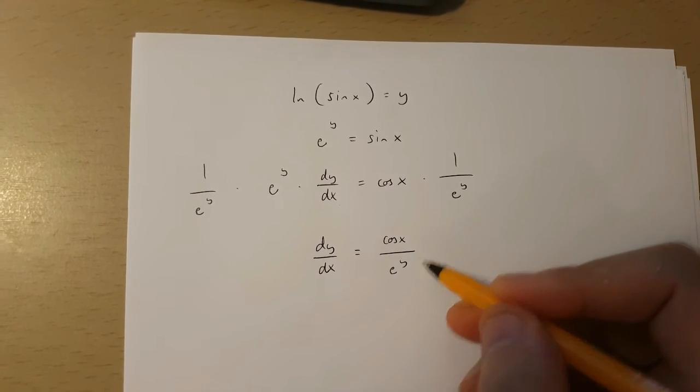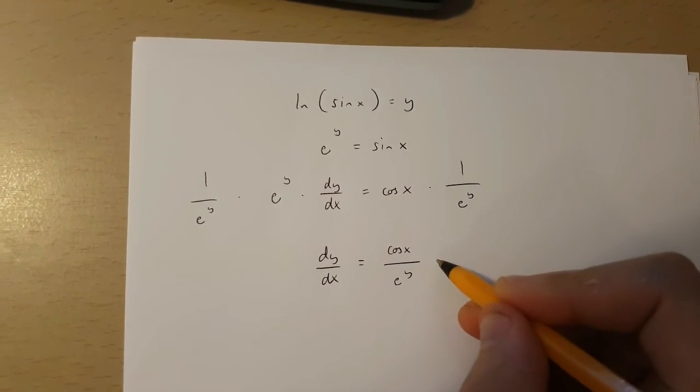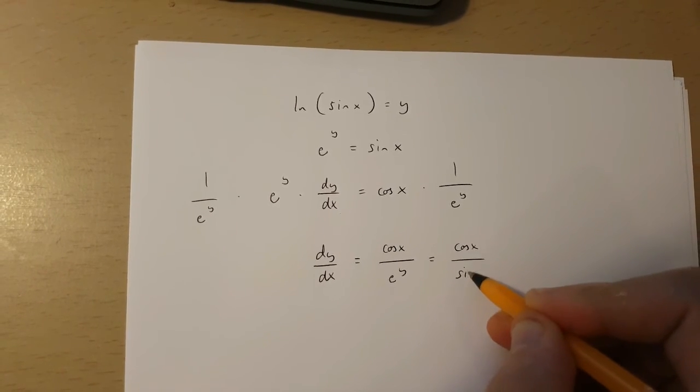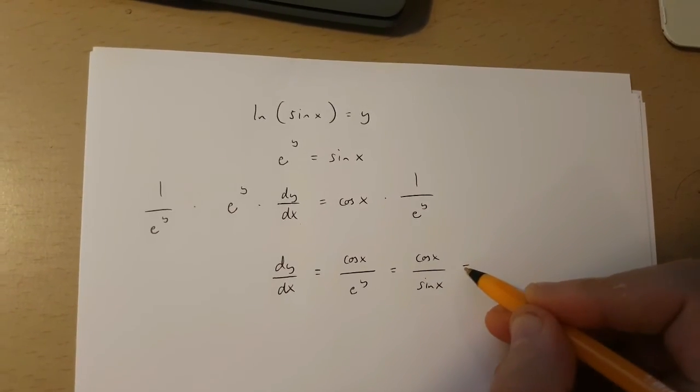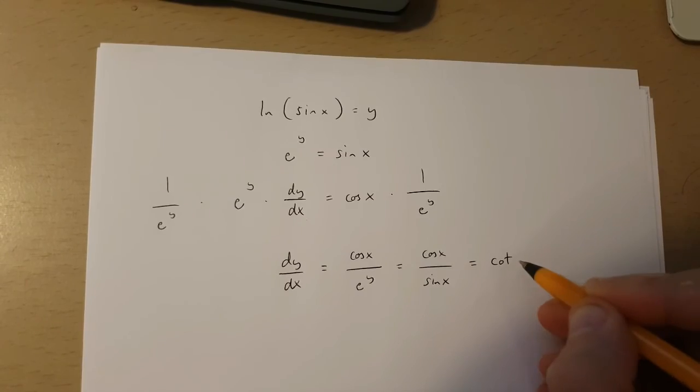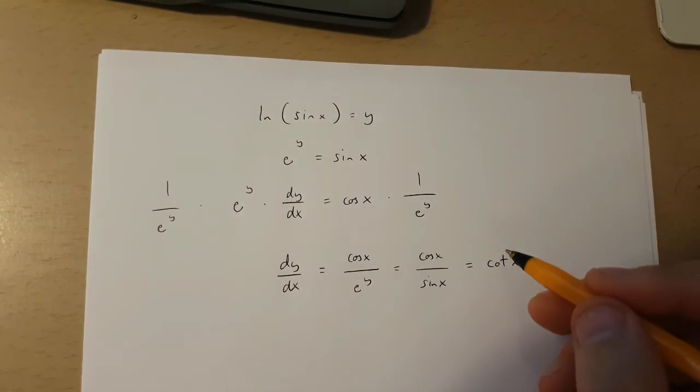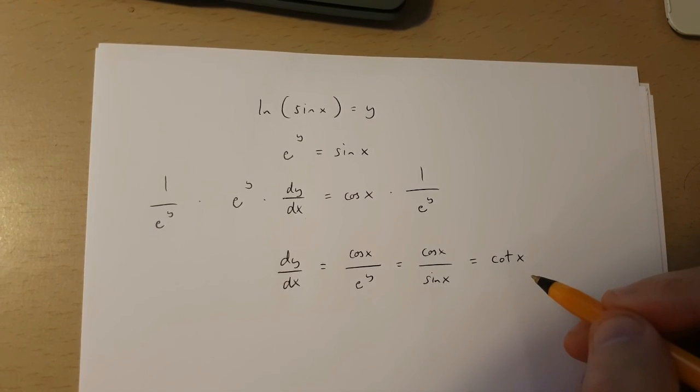because e to the power of y is sin x, dy over dx is cos x over sin x and this is in fact cot x. So ln sin x differentiated is cot x.